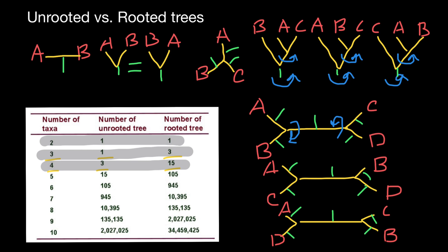I hope you got the idea of how rooted and unrooted trees are related. With only 10 taxa, we can get almost 35 million combinations of rooted trees — so now you understand why I stopped at the fourth line. This is all for today. Subscribe and see you in the next video. Goodbye.